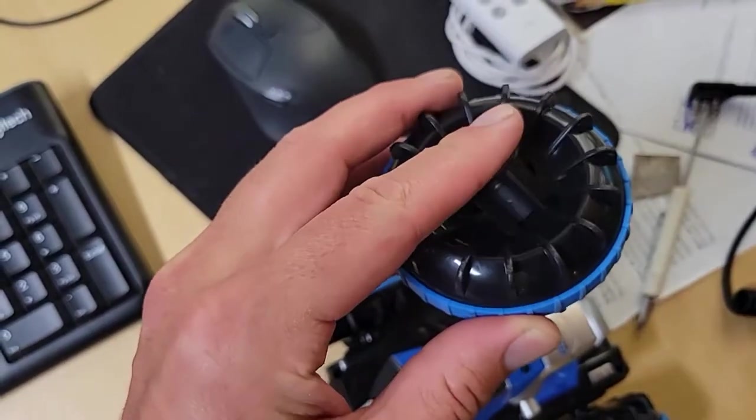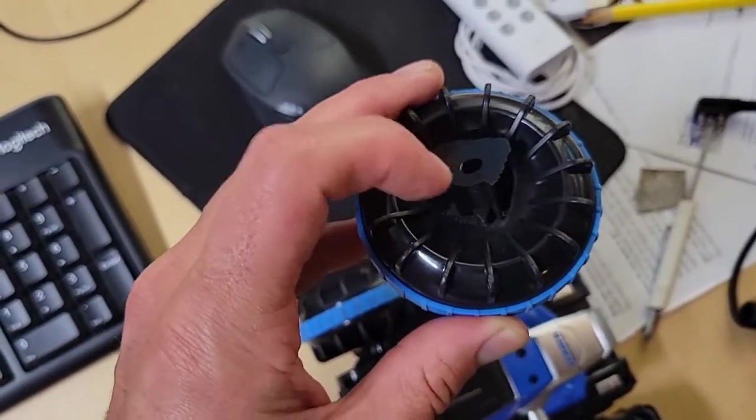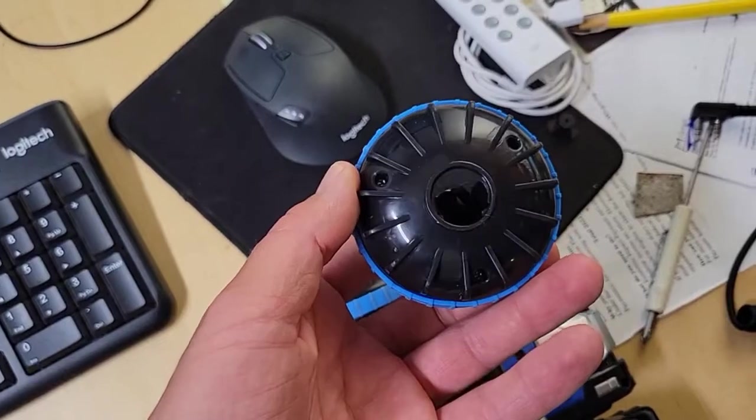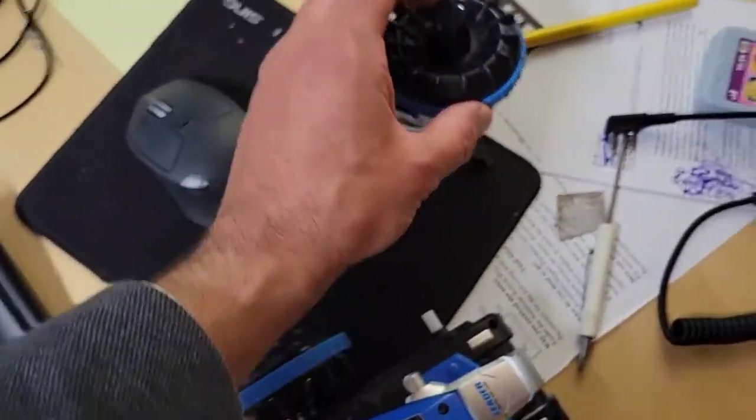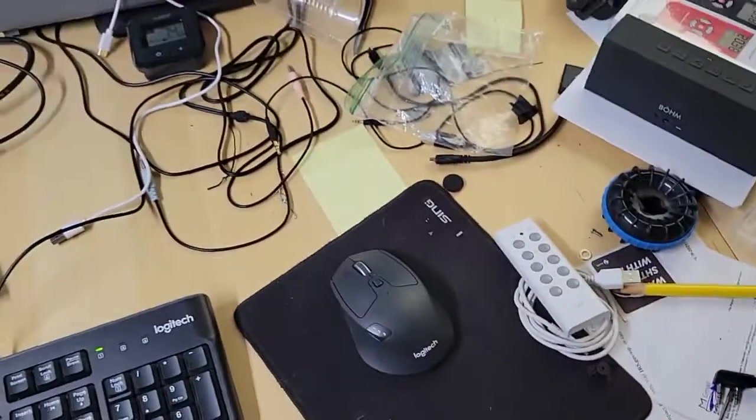Now you might think the easiest way to fix this would be to glue it or something, but it looked like it just wasn't going to really work. So I thought, why not just 3D print a new wheel?